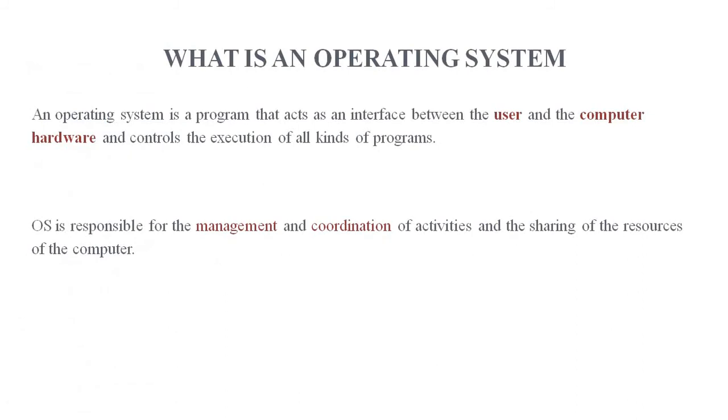What is an operating system? An operating system is a program that acts as an interface between the user and the computer hardware and controls the execution of all kinds of programs. It's a collection of programs and utilities that acts as an interface between the computer and the user. It creates a user friendly environment.